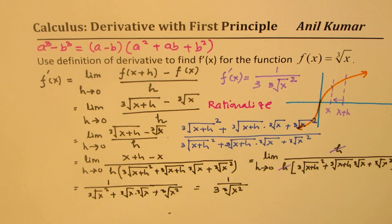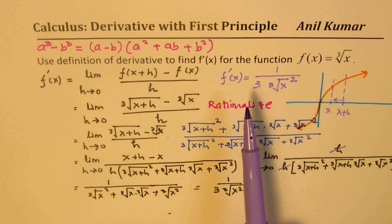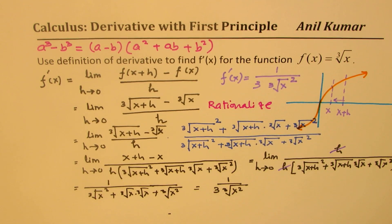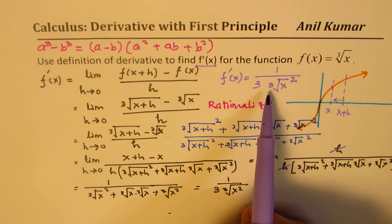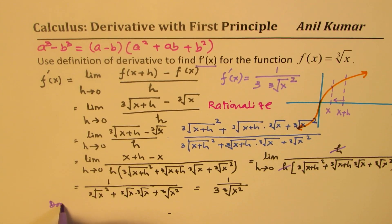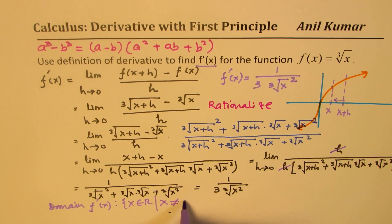So that becomes the function for your derivative. And that is the method of doing it — this is how you rationalize a cube root. Now, what do you analyze from here? Can you write the domain and range for this? The derivative at any general point is basically a function, and you can write its domain and range. So the domain of f'(x) is x belongs to real numbers. However, you see that x is in the denominator, so x cannot be equal to 0.